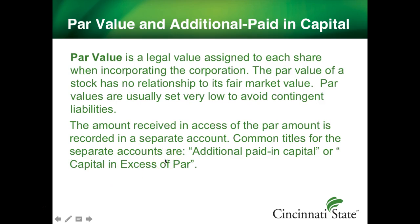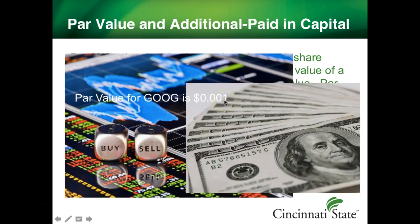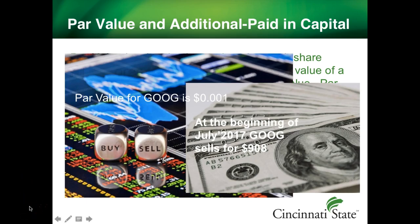Both accounts will be displayed on the balance sheet and the statement of stockholders' equity. The par value of Google, or Alphabet Inc., is a tenth of a cent. At the beginning of July the stock was trading for $908 a share. For each stock issued, the capital stock account will be increased by $0.001 and the additional paid-in capital will be increased by $907.009. Keep in mind that the market price changes dynamically, so the additional paid-in capital will be affected accordingly.